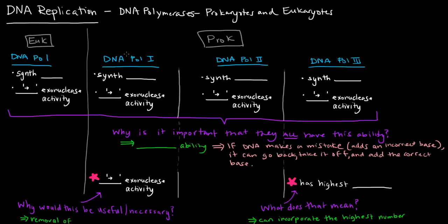So we'll start off with eukaryotes because they're simple and they really only have one DNA polymerase that we're going to be concerned with. Their DNA polymerase synthesizes 5' to 3' and it has 3' to 5' exonuclease activity. I'll talk about why that exonuclease activity is important in just a second.